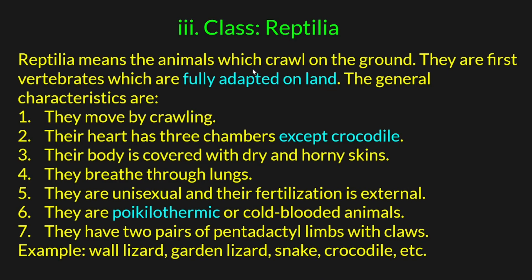Next is class Reptilia. Reptilia means animals which crawl on the ground. They are the first vertebrates that are fully adapted to life on land. Their general characteristics: they move by crawling, their heart has 3 chambers except in crocodiles (which have 4 chambers). Their body is covered with dry and horny skin, like crocodile or snake skin. They breathe through lungs.